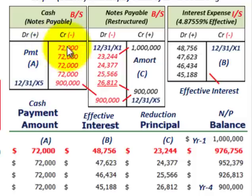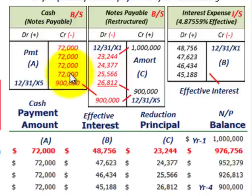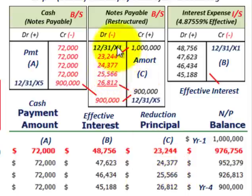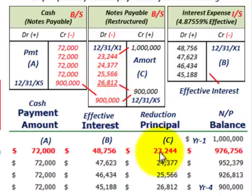For the cash account, we credit (reduce) cash for each of the four years by $72,000 — that was the cash payment. For notes payable, we debit (reduce) notes payable by the amortized amount — that's the reduction of principal (the C column) from the amortization schedule: $23,244 in year one through $26,812 in the last year. The total is amortized down to $900,000.